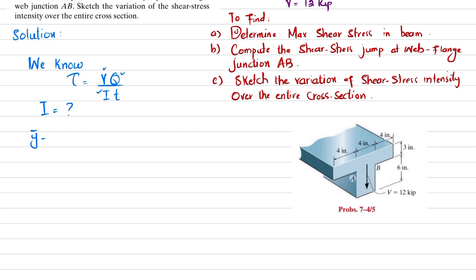For the location of the neutral axis, the formula is ȳ = ΣȳA divided by ΣA. We have two sections: the upper portion is number two and the lower portion is number one. We will take the upper surface as a reference and take all calculations from there.